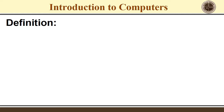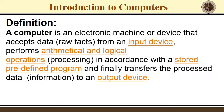Let us look at the definition of a computer. A computer is an electronic machine or device that accepts data — raw facts — from an input device, performs arithmetic and logical operations (also called processing) in accordance with a stored predefined program, and finally transfers the processed data or information to an output device.